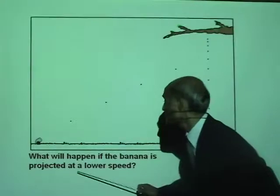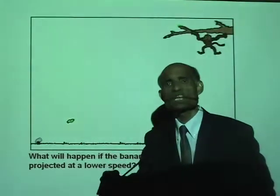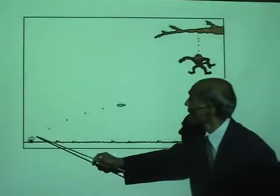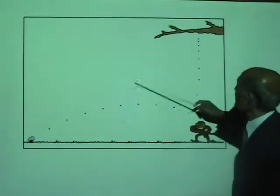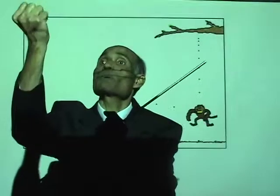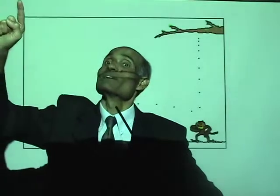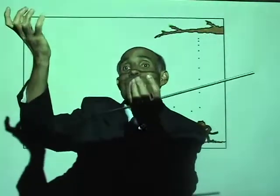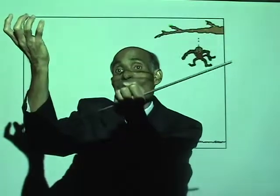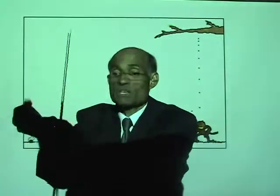The banana is falling and the monkey is also falling at the same rate. If you aim the banana exactly at the monkey, the banana and the monkey will always be falling together and the monkey will get the banana. Even if the projection speed is low, as long as you aim the banana at the monkey, the monkey will get it — because the banana, the moment it is fired, falls at the same rate as the monkey.